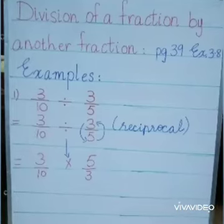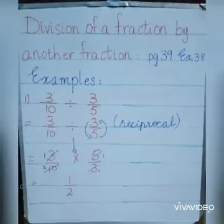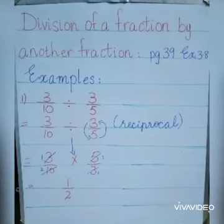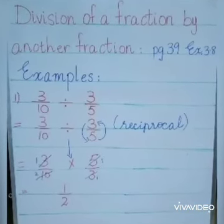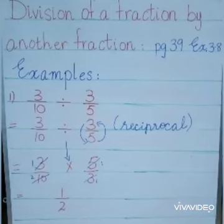We get 3 over 10 multiplied by 5 over 3. Now we have cancellation: 3 by 3 and 5 and 10. So our answer is 1 over 2.